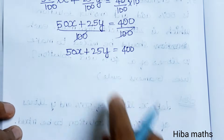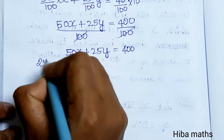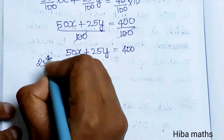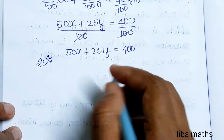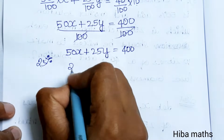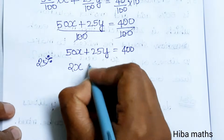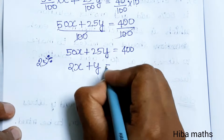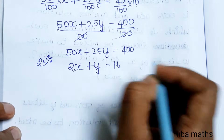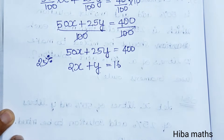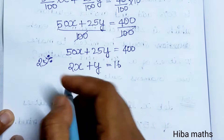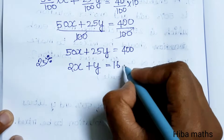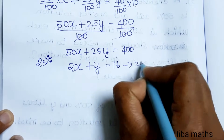Dividing the second equation by 25, we get 2x + y = 16. Now we have two equations: the first equation is x + y = 10, and the second equation is 2x + y = 16.